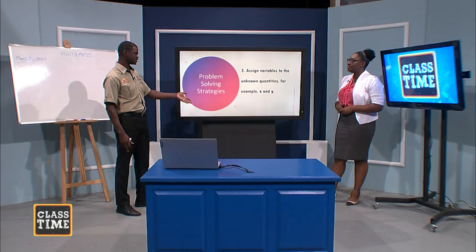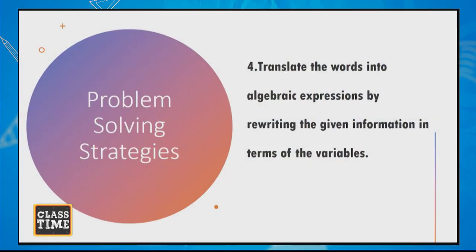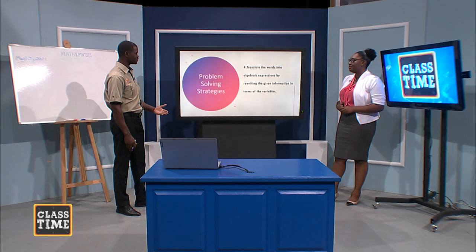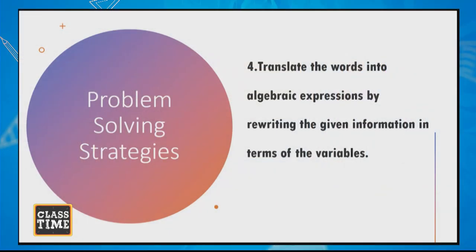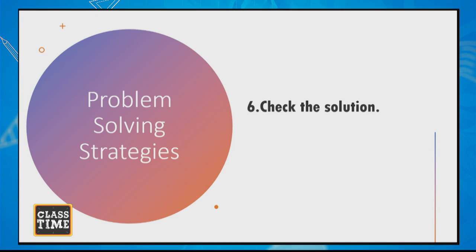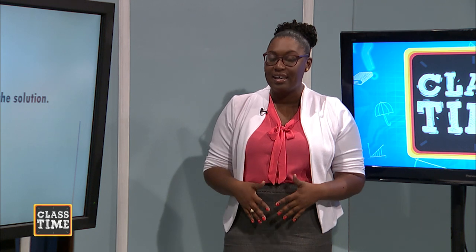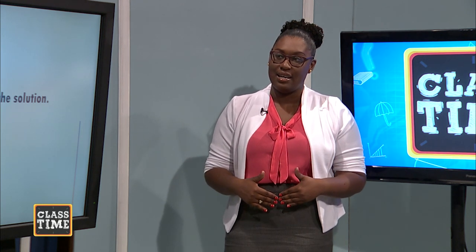These are just examples — X and Y — so it could be any other variables that we are using. We can translate the words into algebraic expressions by rewriting the given information in terms of the variables. Then step five: set up a system of equations if needed. And very important — check your solution. A lot of the times we're going through our questions really, really fast, but in essence you made a mistake. How will you know? Check your answer. Don't be so quick. Stop and check what it is that you're doing.